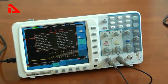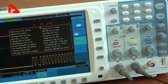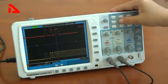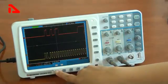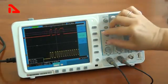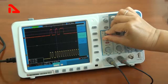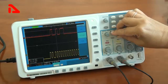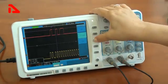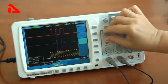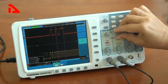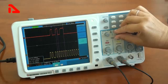The oscilloscope performs 20 types of automatic measurements: Peak to Peak, Maximum, Minimum, Top, Base, Amplitude, Average, RMS, Overshoot, Pre-shoot, Frequency, Period, Rise time, Fall time, Delay, Width, and Duty.